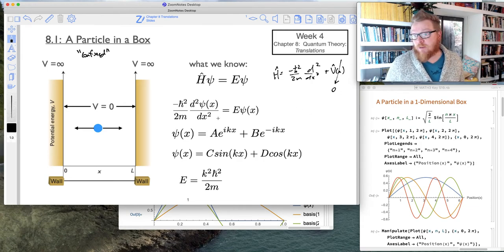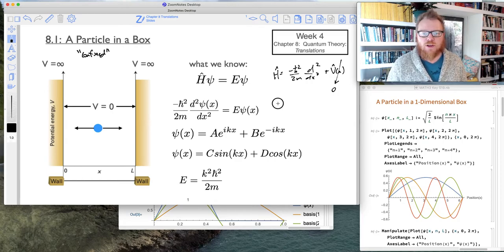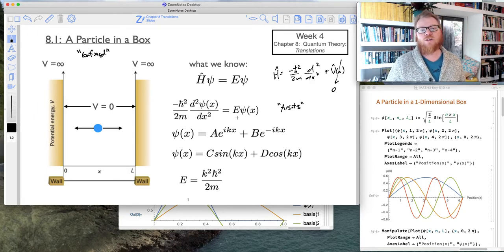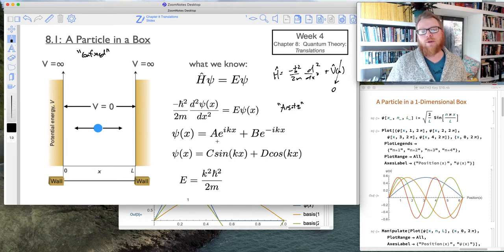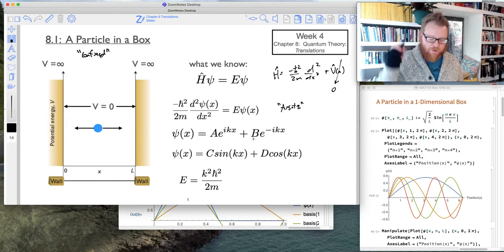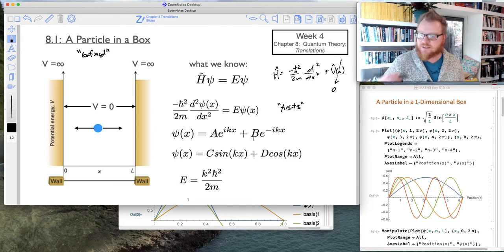So we've solved this problem already. We did this in the Chapter 7 lecture notes. And when we used the ansatz method, we got all imaginary solutions. Which means our general solution for the wave function can be written as A times e^(ikx) plus B times e^(-ikx).